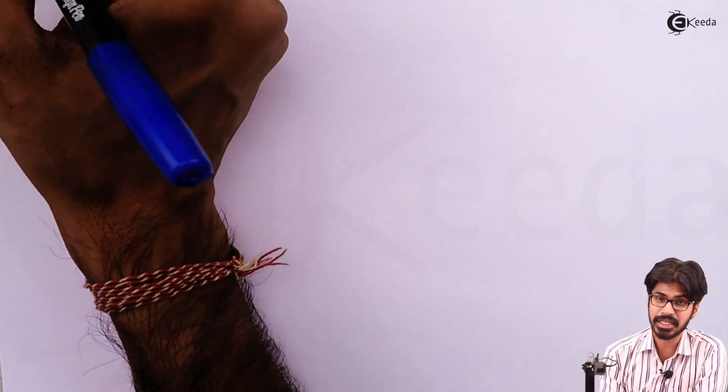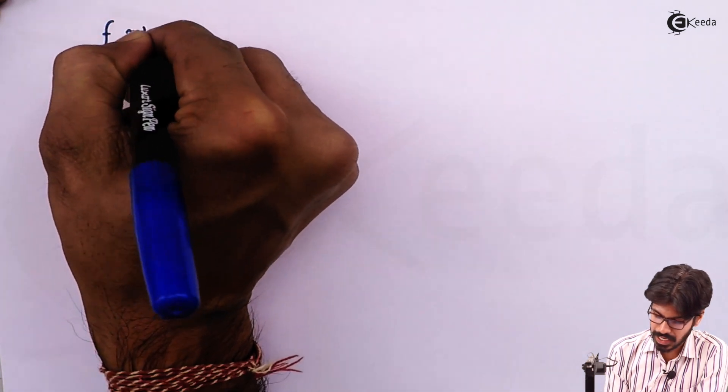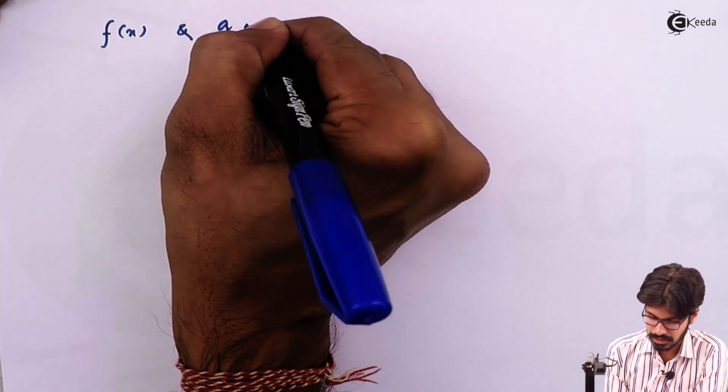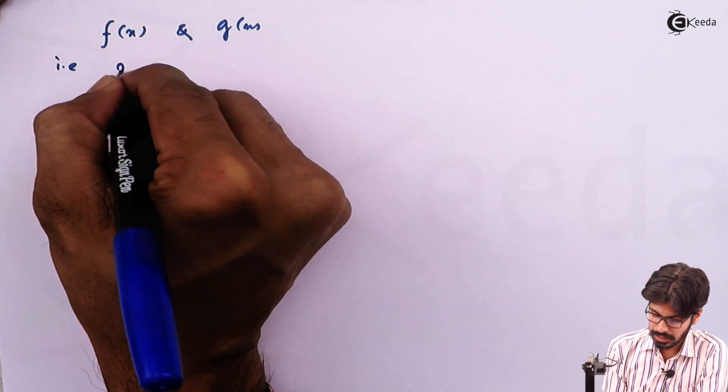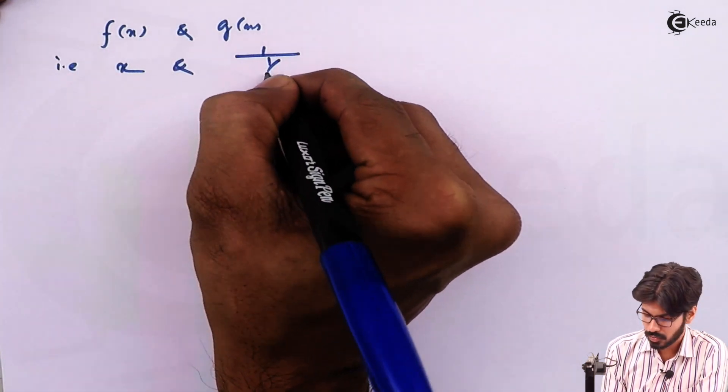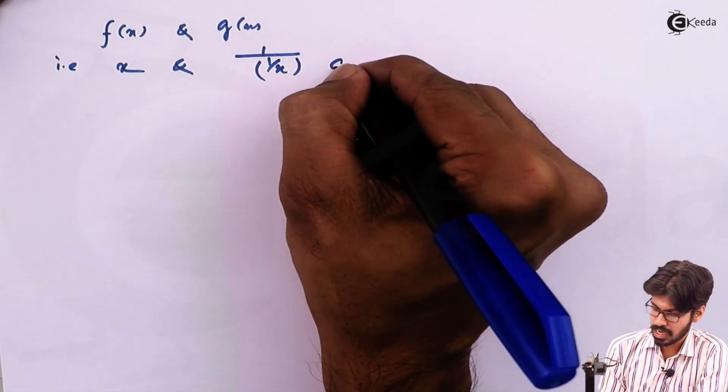So as the three conditions are satisfied we can say that f(x) and g(x), that is x and 1/(1/x), are identical.